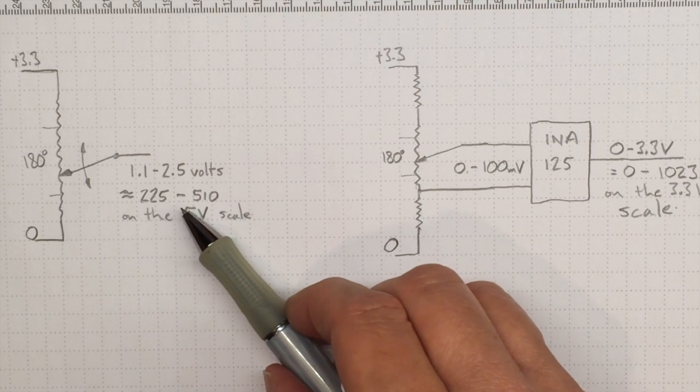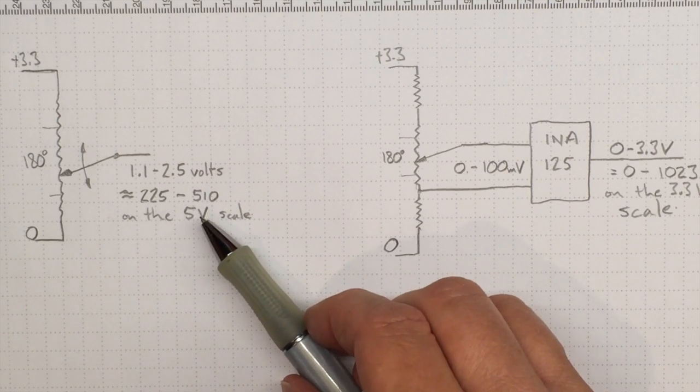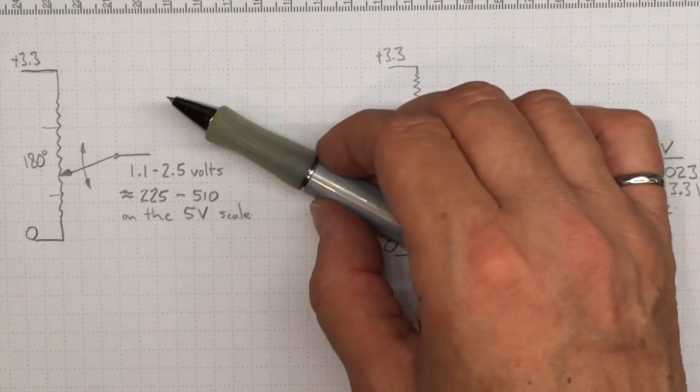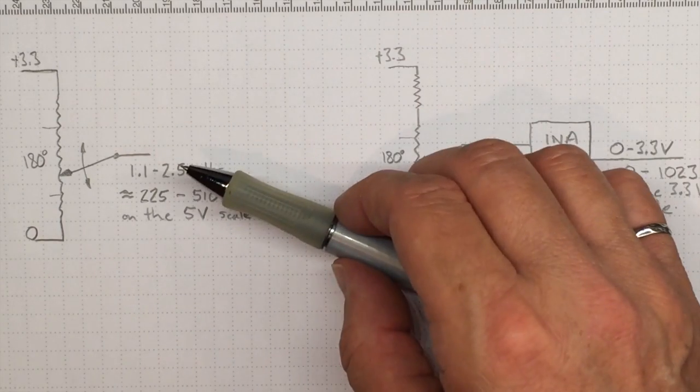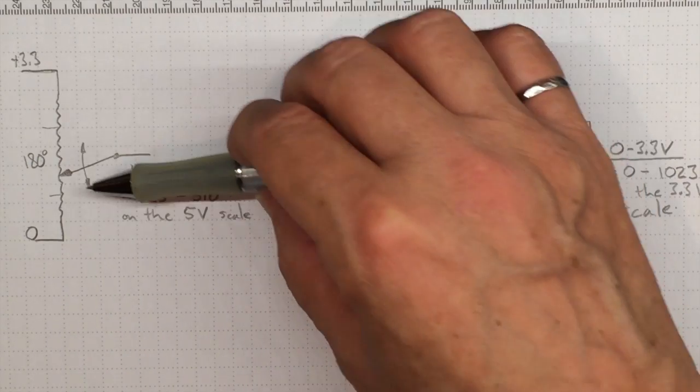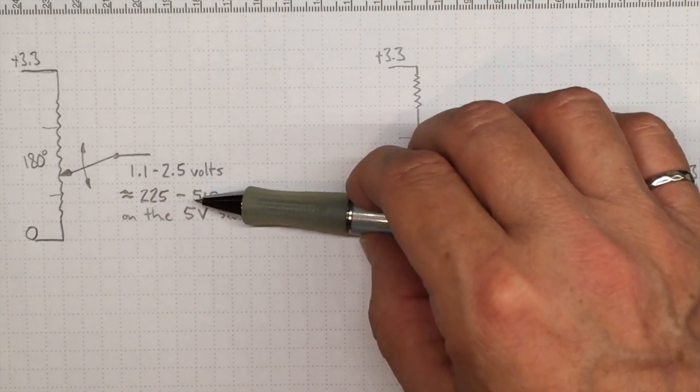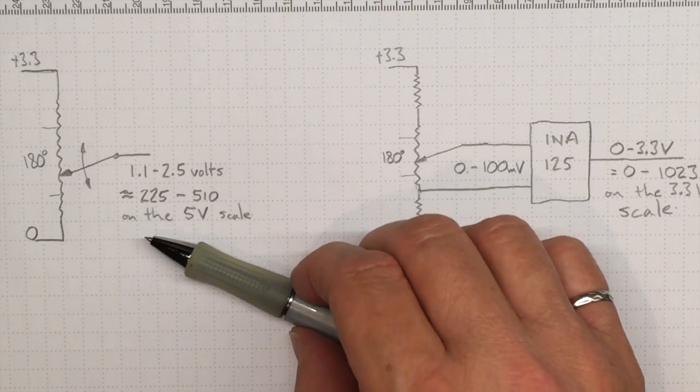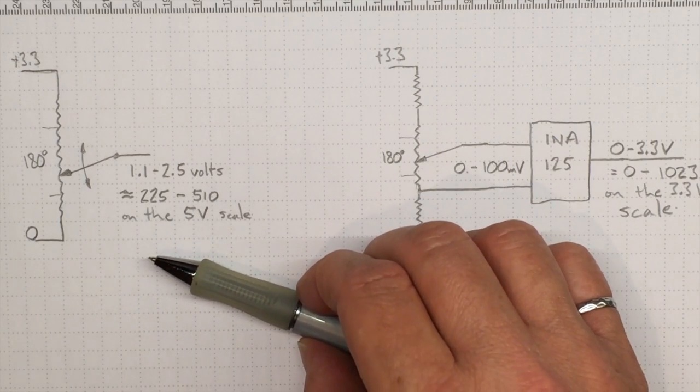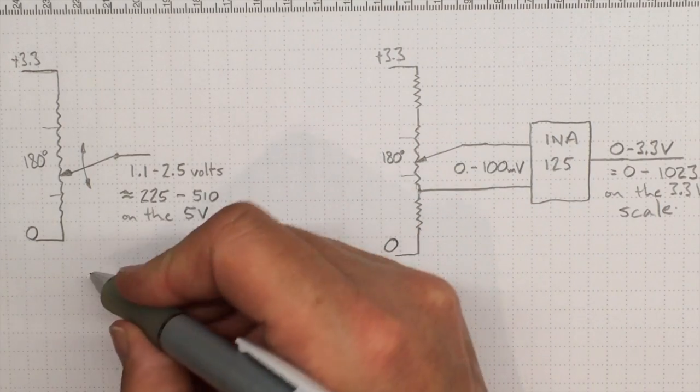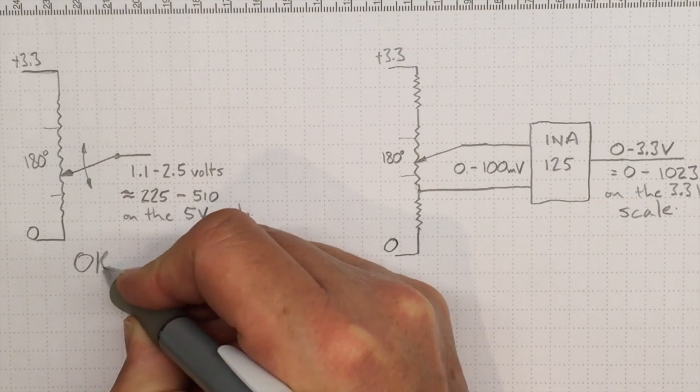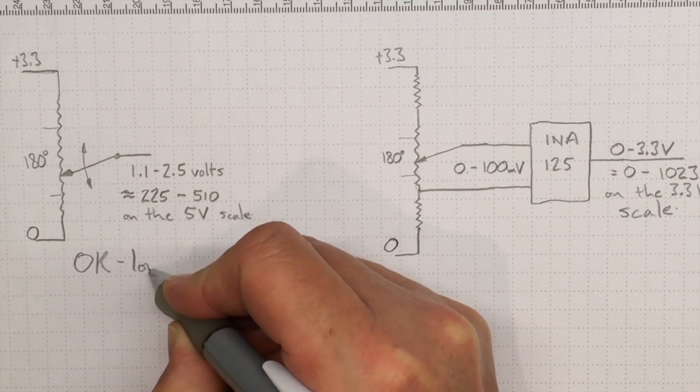So that's really only using about a quarter of the 1,023 range of data values that I could get. So that's going about one division per degree. That's not as high resolution as I could get. So, okay, but it's low resolution.